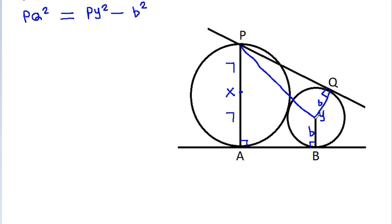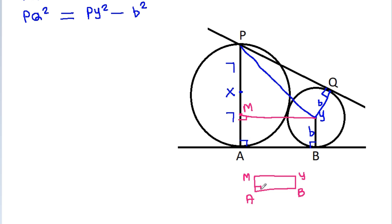Now if we draw a perpendicular from Y on AP, suppose this point is M. Then in quadrilateral ABYM, this angle is 90 degrees, this angle is 90 degrees, and this angle is 90 degrees. So it will be a rectangle. And YB is b, so MA will be b.